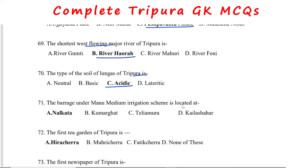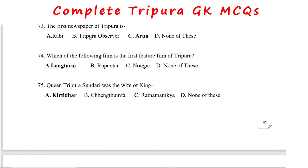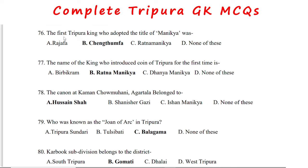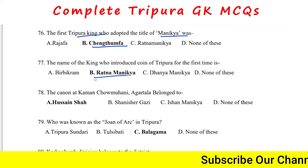The Vari under Mono medium irrigation scheme is located at Nolkata. The first tree garden of Tripura is Hirachara. The first newspaper of Tripura is Arun. The first feature film of Tripura is Long to Ride. Queen Tripura Sunduri was the wife of King Kiridhar. The first Tripura king to adopt the title Manika was Chemtumpfa. The king who introduced coins in Tripura for the first time was Maharaja Ratnamanika.